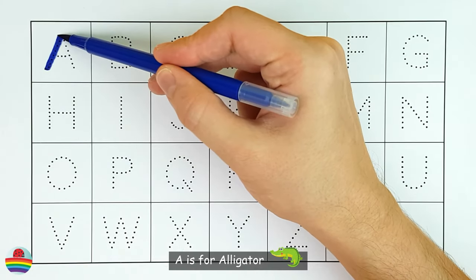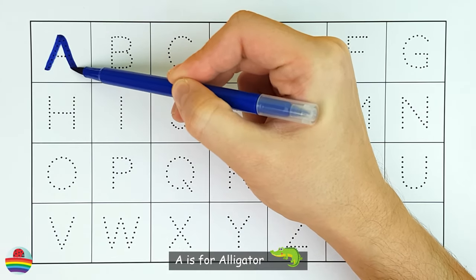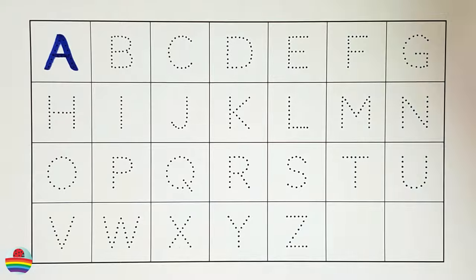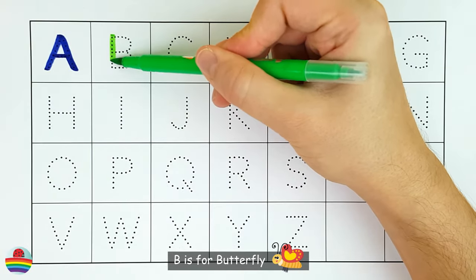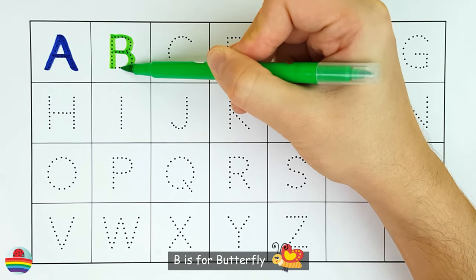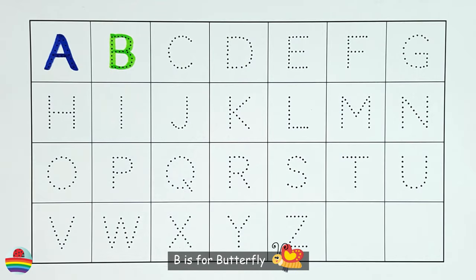A. A is for Alligator. A. B. B is for Butterfly. B.